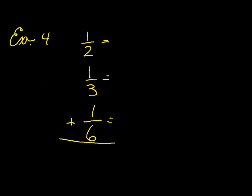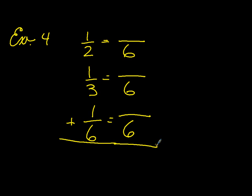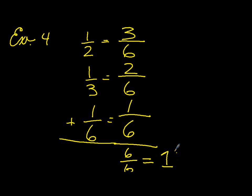Next, example four. I've already written the numbers vertically. So again, we're going to start off by finding a common denominator. In this case, we have six. This is three-sixths, two-sixths, and one-sixth. And when we add them up, we end up with six-sixths, which is equal to one.